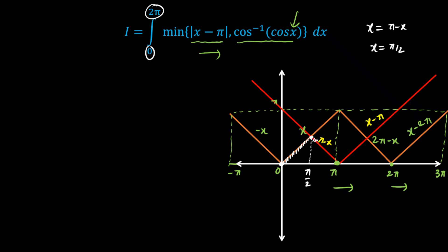After π/2, the branch changes to |x - π|. Now after π, the branch remains, but the function changes to x - π. After this next crossover point — which by symmetry is 3π/2, or found by equating x - π and 2π - x — the branch changes back to cos⁻¹(cos x), which gives 2π - x. So now we have fully defined the minimum function.